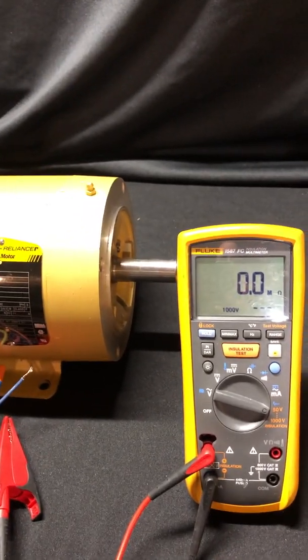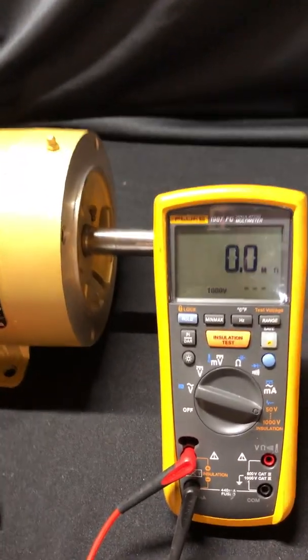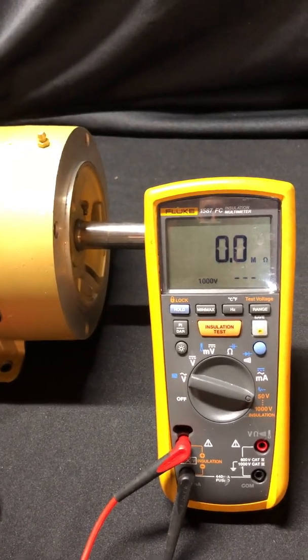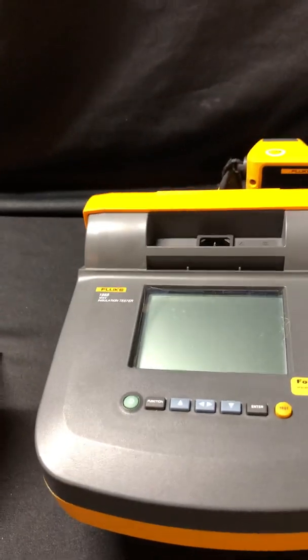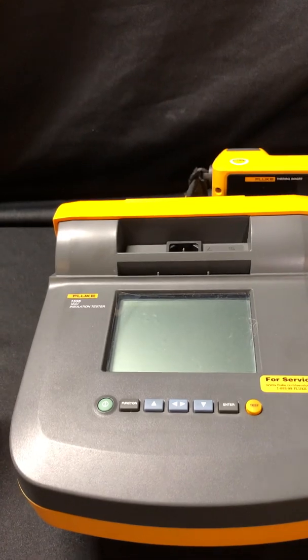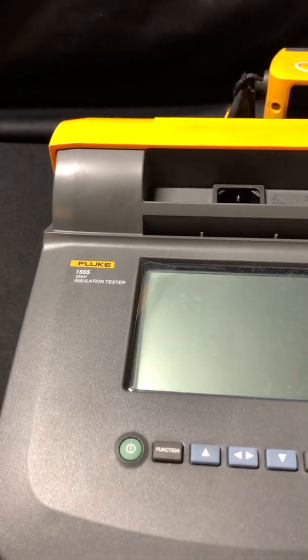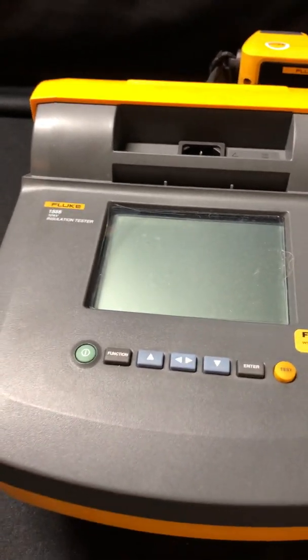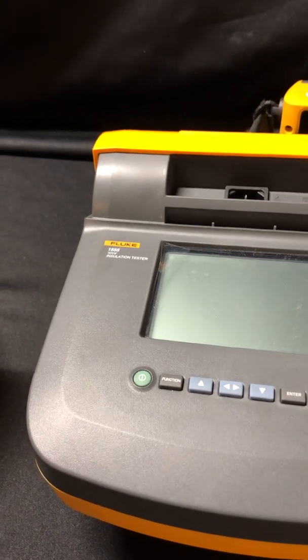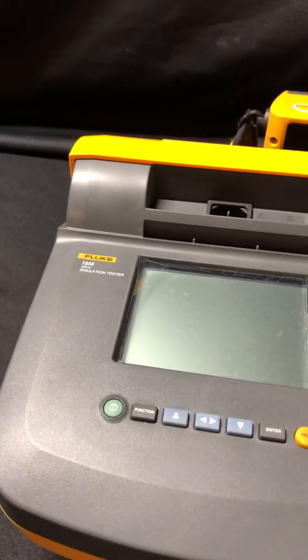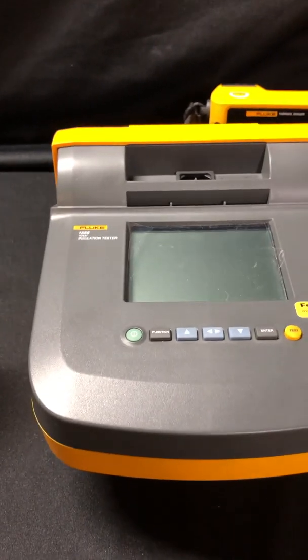You may want to look at if you're only using a thousand volt insulation tester, you may want to consider a 5 or 10 kV mega, like this 1555 insulation tester, to be able to apply a higher test voltage on your 480 volt and higher motors because of the reasons I just mentioned.